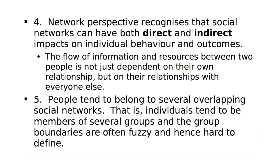The fourth aspect of the network perspective is that it recognises that social networks can have both direct and indirect impacts on individual behaviour and outcomes. It's not just the direct connections that matter — it's also how the people you know connect to each other and who else they connect to. To understand the flow of information and resources, you have to understand the entire structure of the social network. Finally, the fifth aspect is that people tend to belong to several overlapping social networks, and group boundaries are often fuzzy and hard to define.